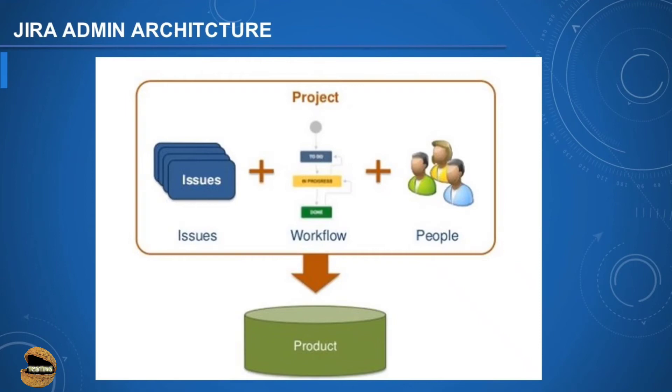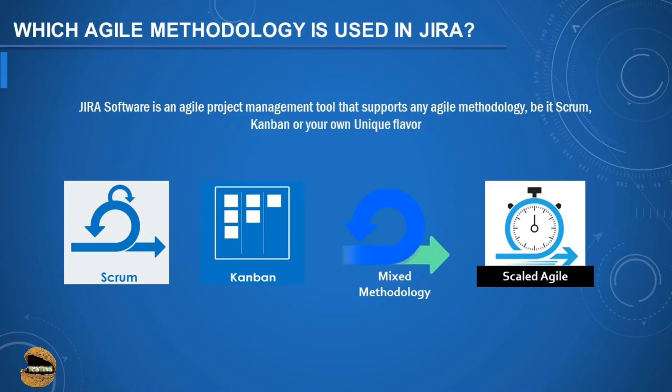So why is there a need for customization? If you remember this slide from our previous tutorial series, it mentioned which agile methodology is used in Jira. Jira software is an agile project management tool that supports any agile methodology — be it Scrum, Kanban, mixed methodology, scaled agile, or any unique flavor. As you can see, an organization can make use of any of these agile methodologies.